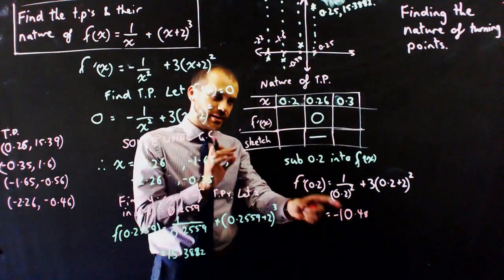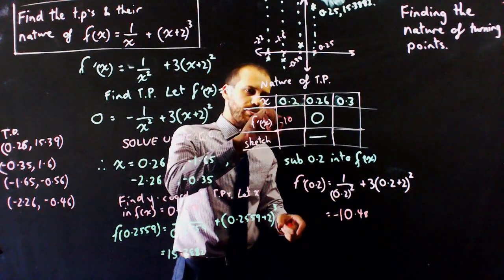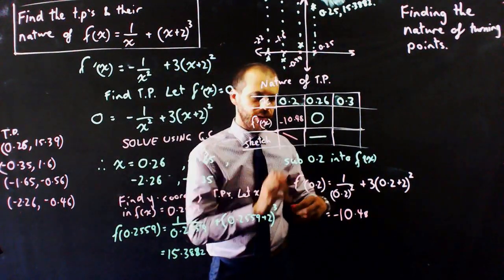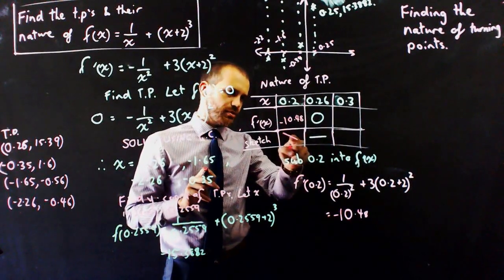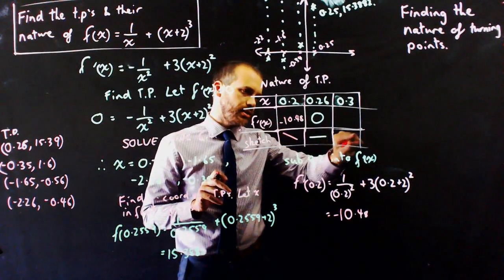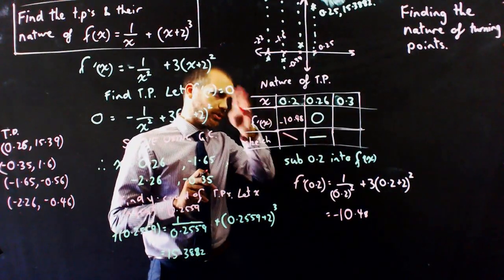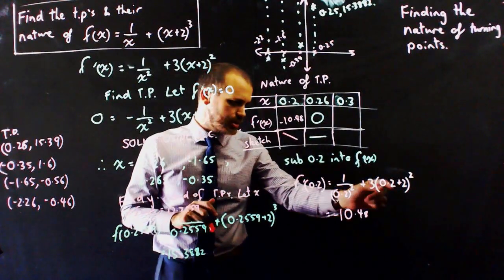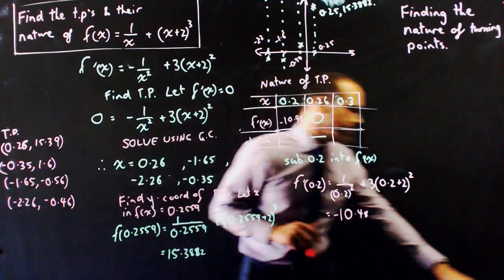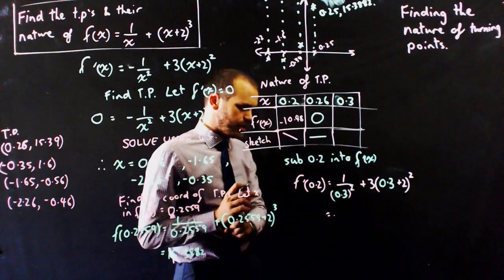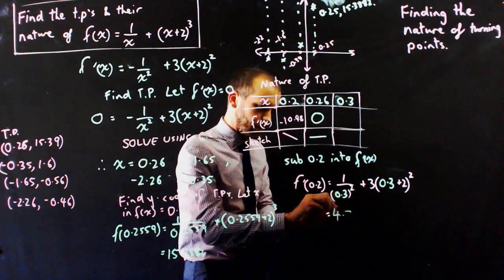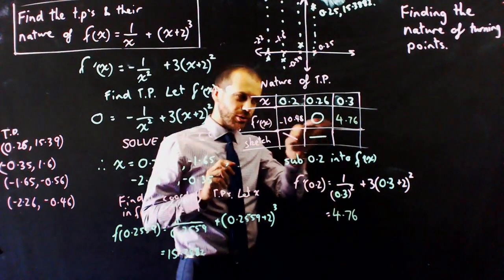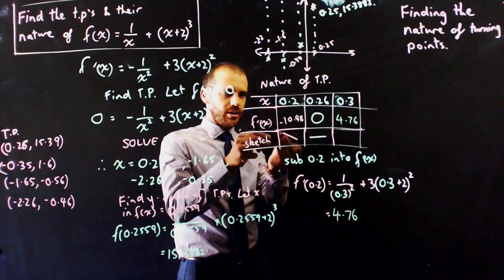Now if you've got a negative number for your gradient, -10.48, that means the line at that point is going downhill. So I think that this is going to be a turning point with a line here, a line here, and then a line here. It doesn't have to be that way. It could be an inflection point where it goes down that way and that way. So we still have to test 0.3 by putting 0.3 here and 0.3 here and finding out what that value is. So I've put in 0.3 and 0.3 into that equation, and I get an answer of 4.76. That's a positive gradient, and if that's a positive gradient, it's going to look like that.